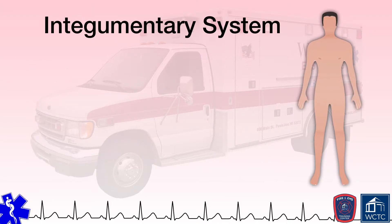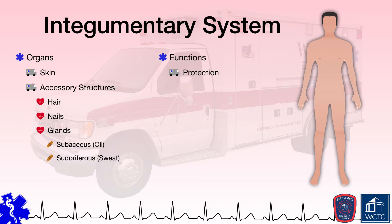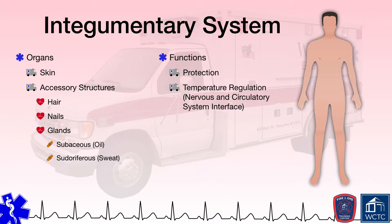The integumentary system is the largest and most visible system of the human body as it consists predominantly of our skin along with some accessory structures such as hair, nails, and glands that produce either oil or sweat. This system serves as the interface between the body's interior and the external world or environment. As a result, the integumentary system serves as protection for the body's various organs from external conditions like temperature extremes or radiation such as that from the sun, or other invaders that could cause illness or injury such as mechanical forces, various types of chemicals, or microorganisms and pathogens. The integumentary system plays a very critical part in the body's ability to regulate its temperature.